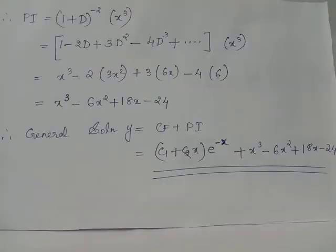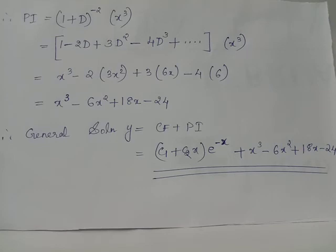We have (1 + x) raised to minus 2 equals 1 minus 2x plus 3x² minus 4x³ plus etc., using binomial expansion. Hence (1 + D) raised to minus 2 equals 1 minus 2D plus 3D² minus 4D³ plus etc., acting on x³. The derivative of x³ is 3x², D² acting on x³ gives 6x, and D³ acting on x³ gives 6.